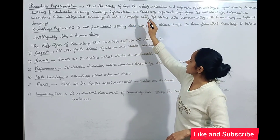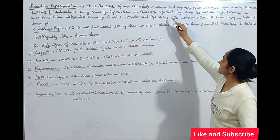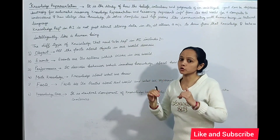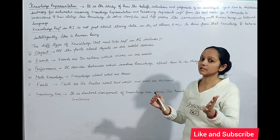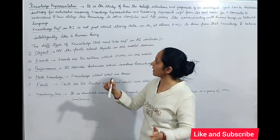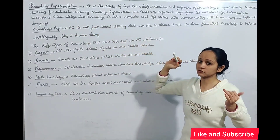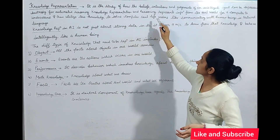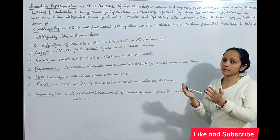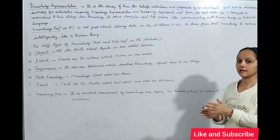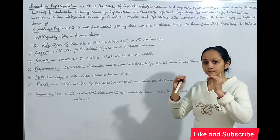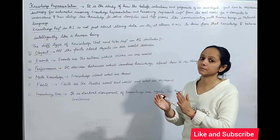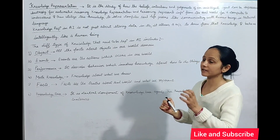Knowledge Representation and Reasoning, which we call K.R.R., represents the information from the real world for a computer to understand. To understand real world problems and knowledge, and then utilize that knowledge to solve complex real-time problems — we provide the machine with knowledge so it can act in any real-life situation.